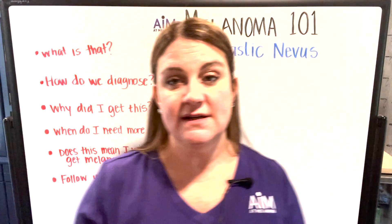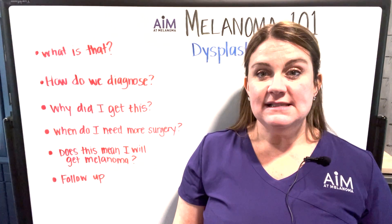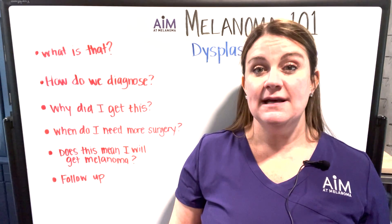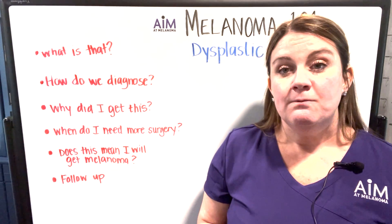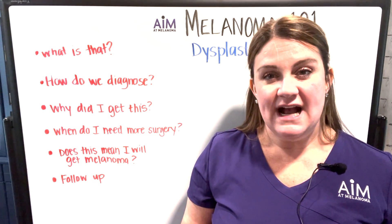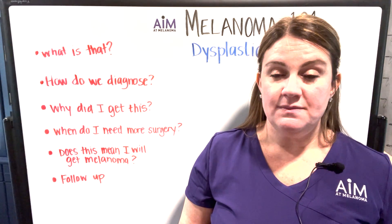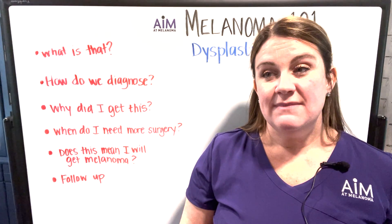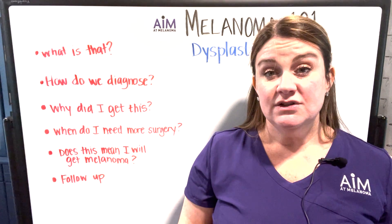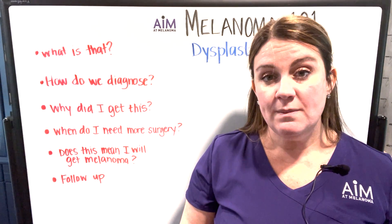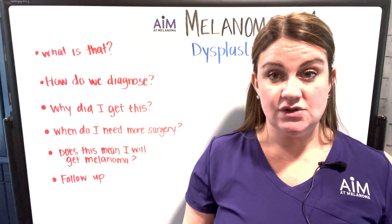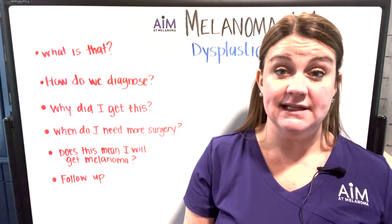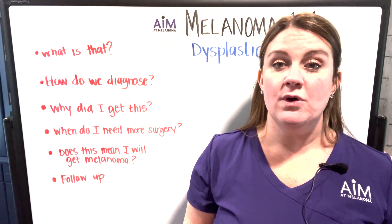So what is a dysplastic nevis? Essentially, dysplastic nevi are moles that when they're looked at under a microscope are atypical. You have a mole that has atypical findings, whether it be the way that the cells are formed. They might cytologically look extremely atypical, but they're not cancerous. Dysplastic nevi are not malignant — they're just atypical moles.